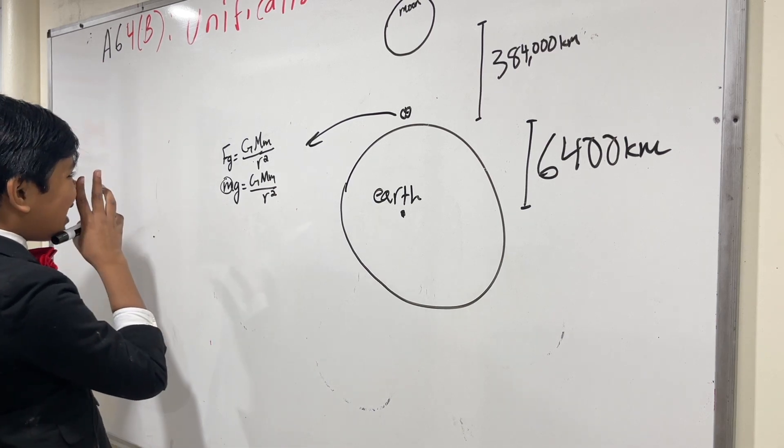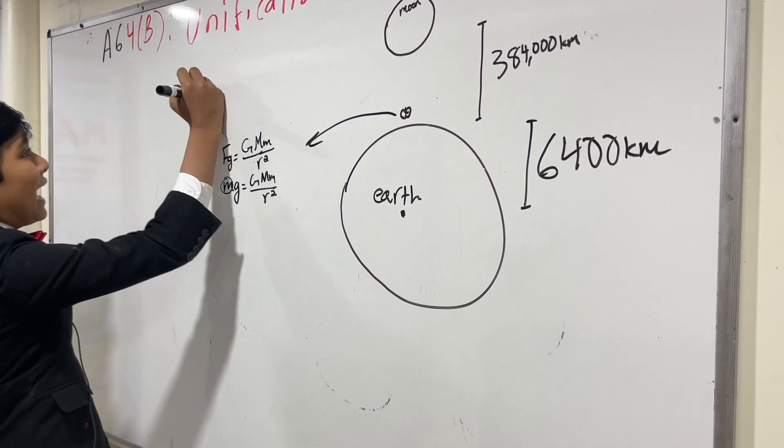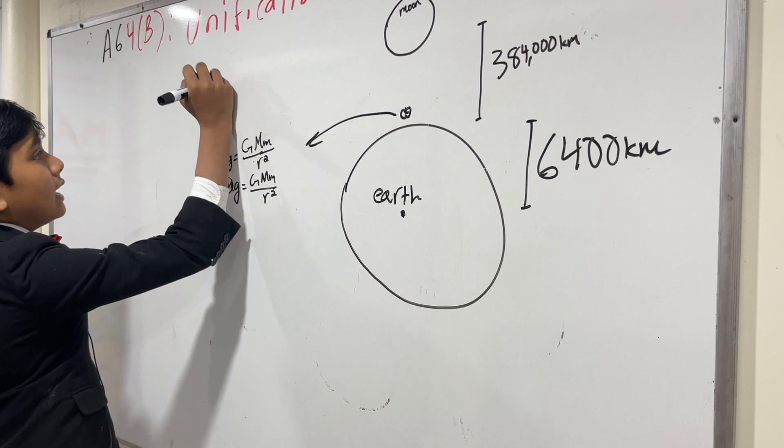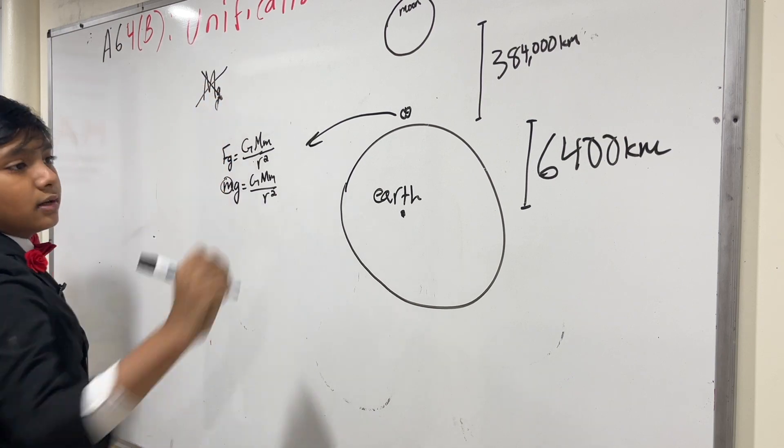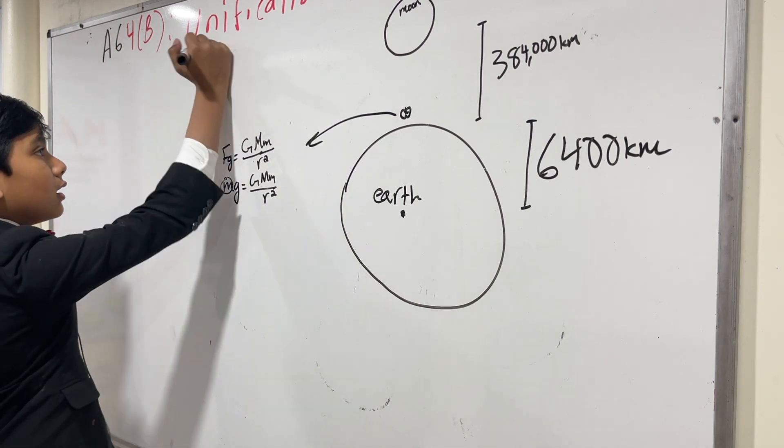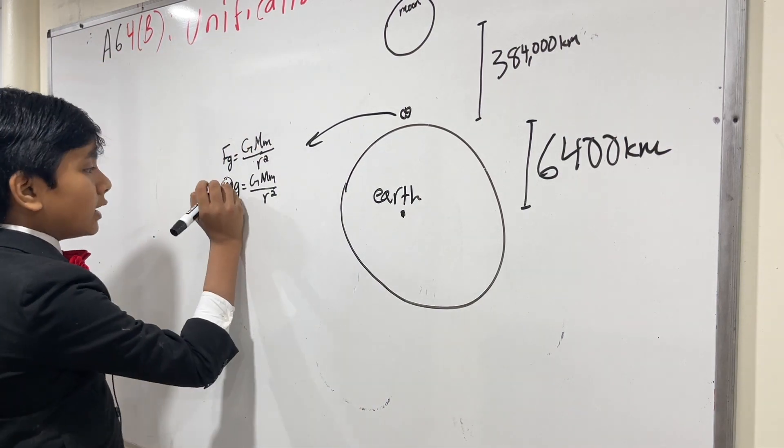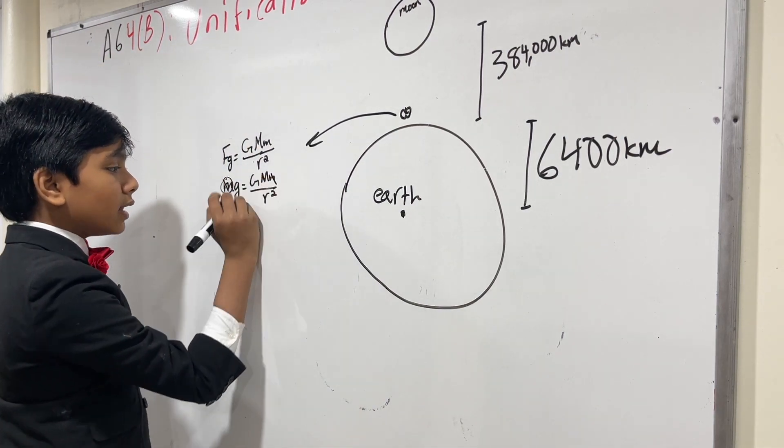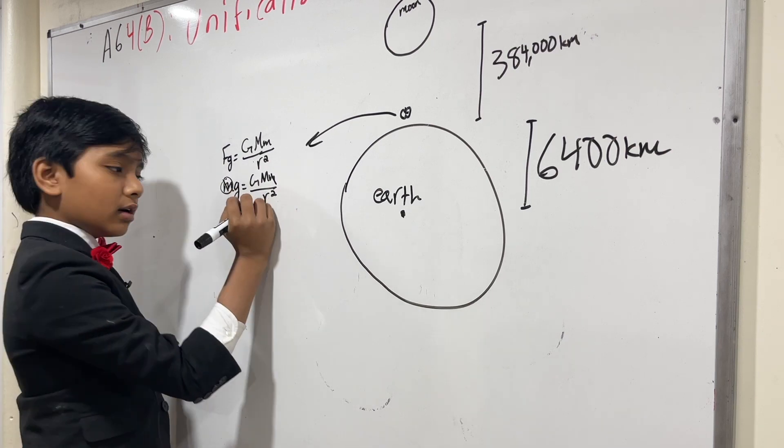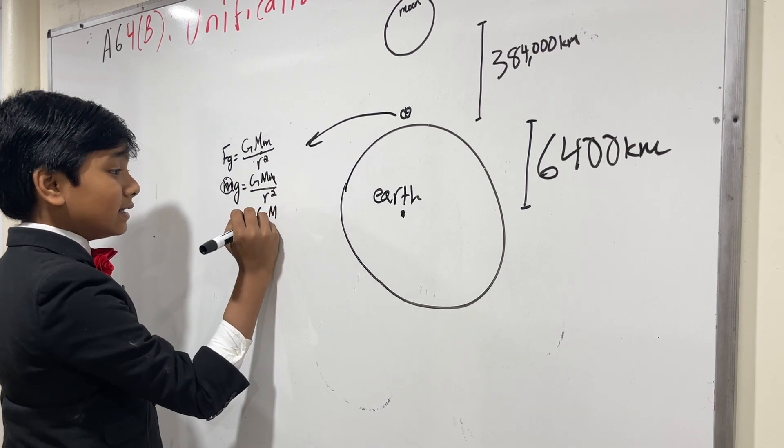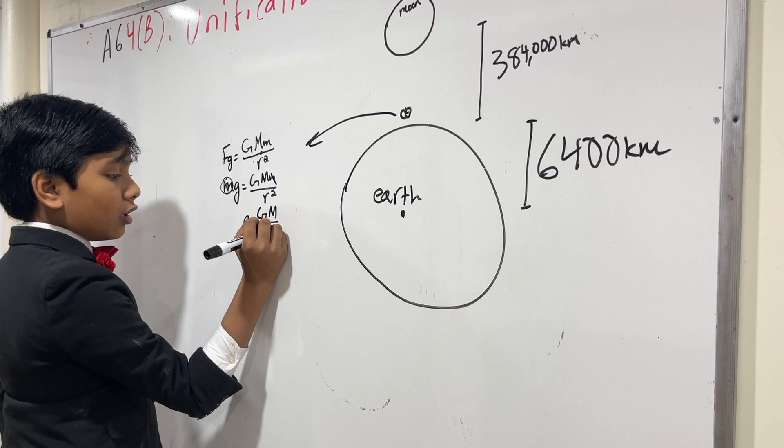We might be questioning, why the little m and little mg? Well, that's because you don't use the mass of the Earth when calculating the gravitational attraction of an object to Earth. You use the mass of the object. So that's why we have the little m here. So now, we have just g is equal to big G big M over r squared.